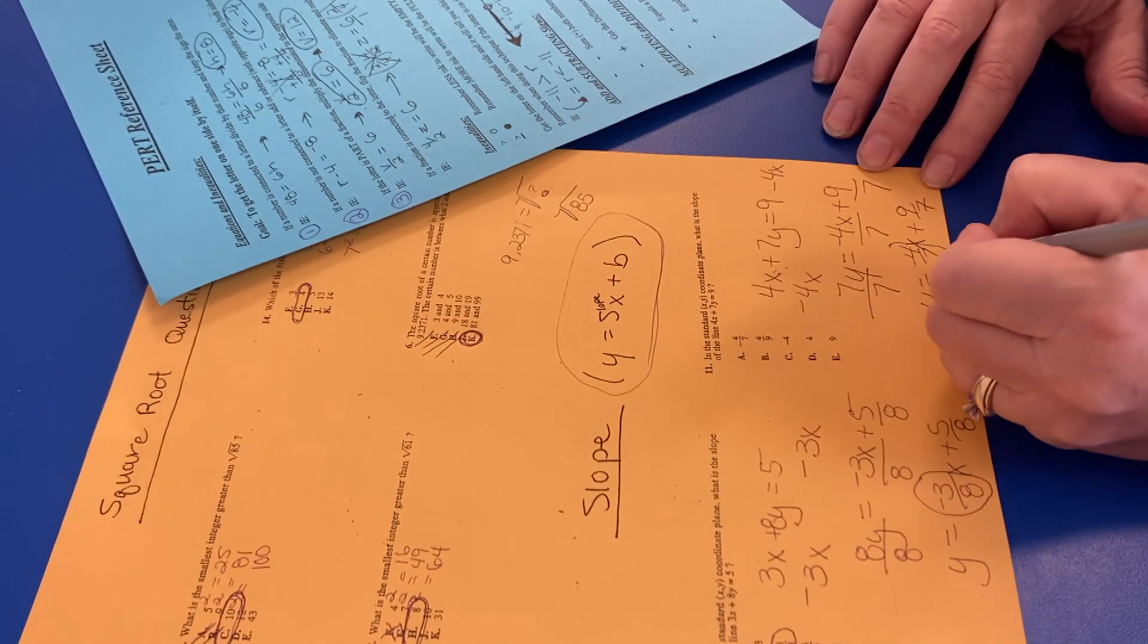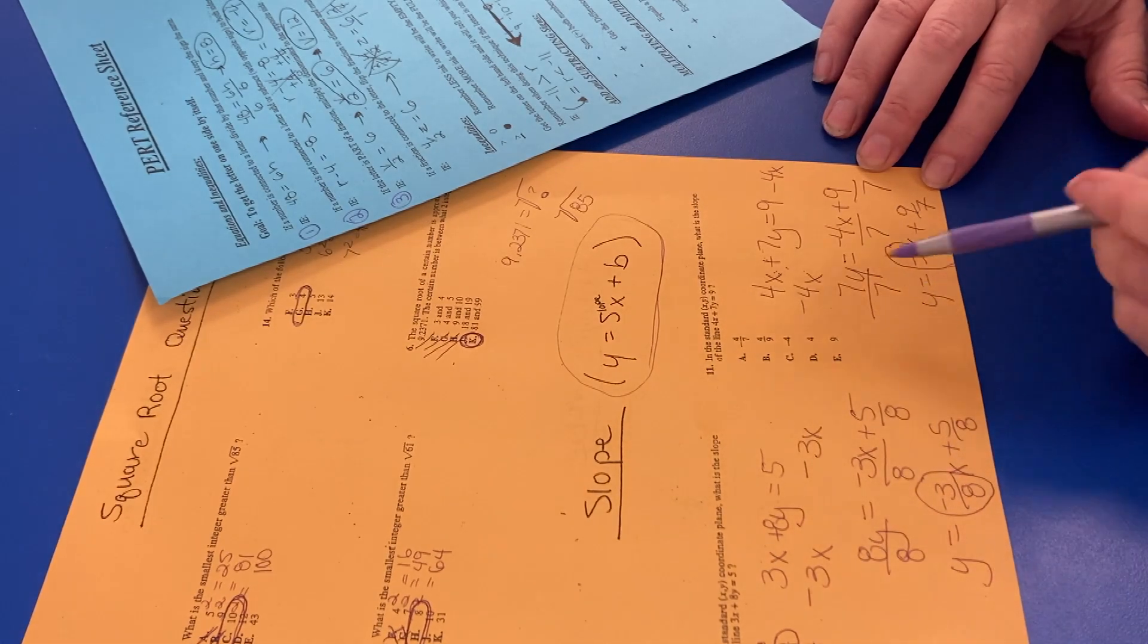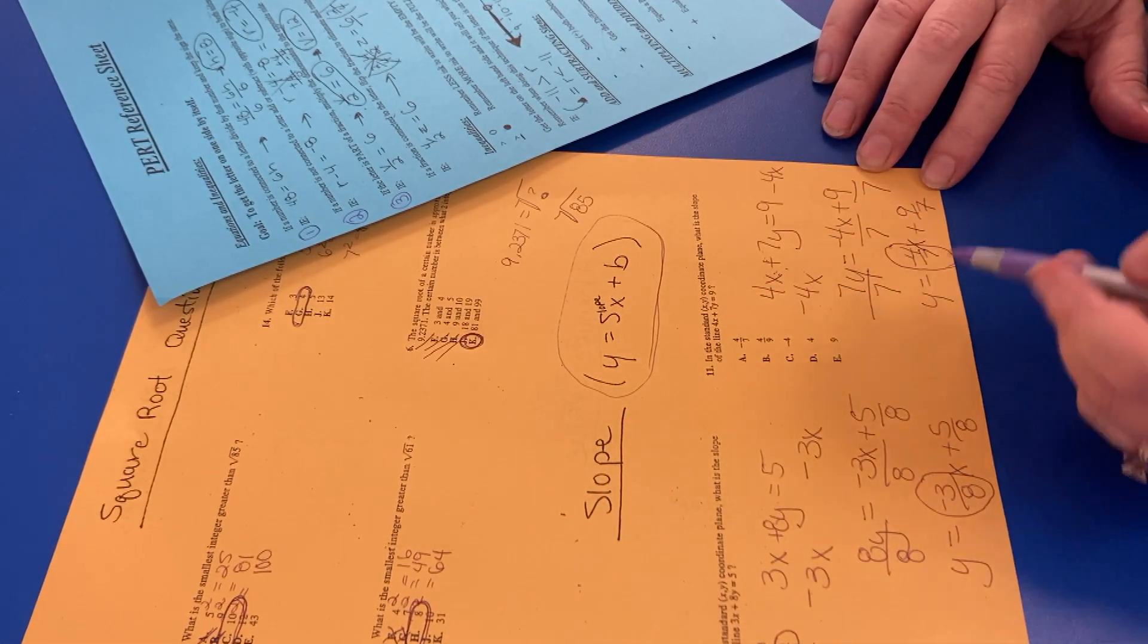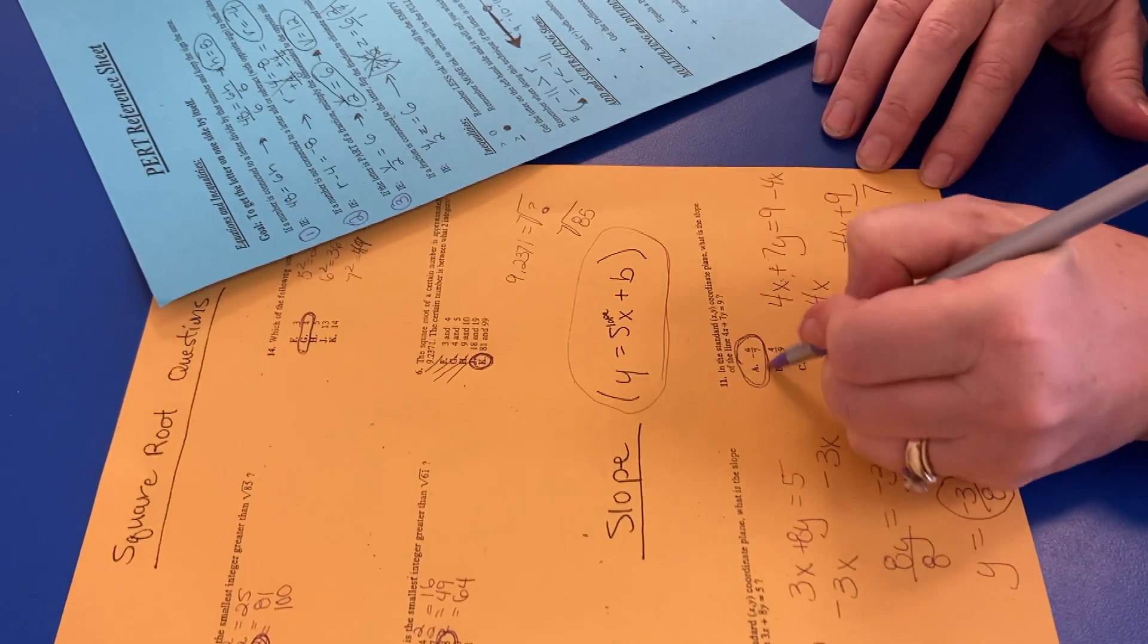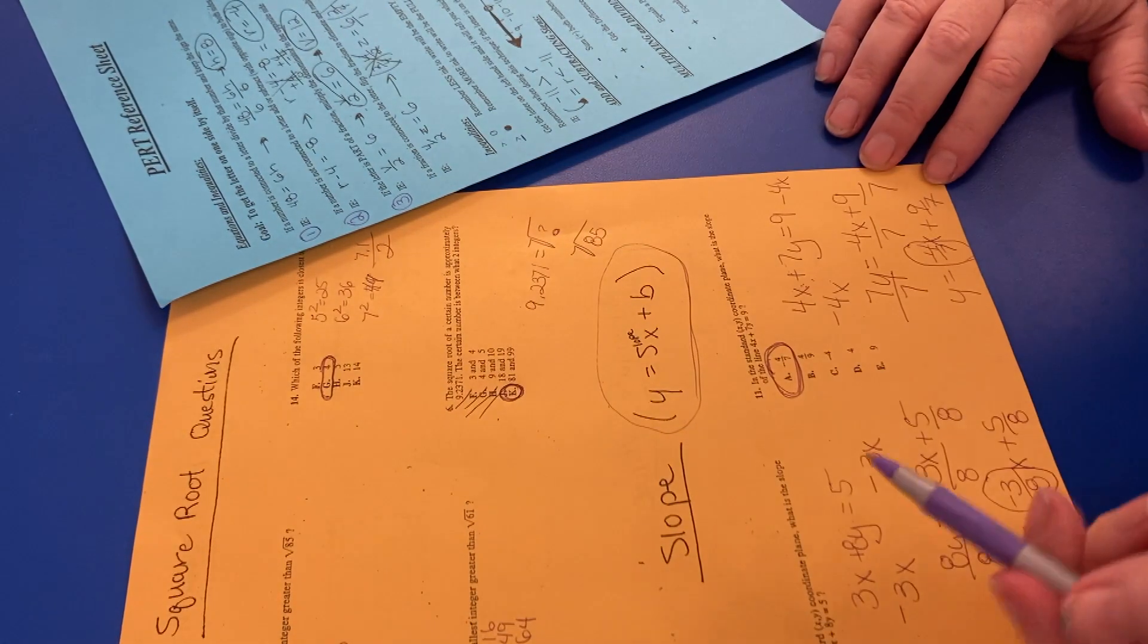What is connected to the X is the slope. What is the slope of the line? It's negative 4 over 7. So it would be A in this case. Okay, so that's square root and slope.